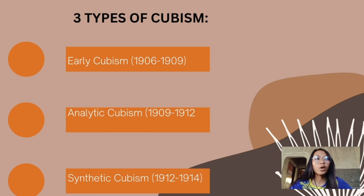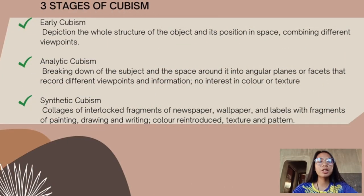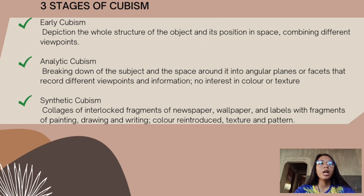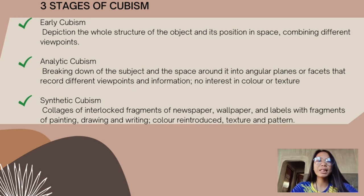There are three stages of Cubism. The first is Early Cubism, which involves the depiction of the whole structure of the object and its position in space, combining different viewpoints. The second stage is Analytic Cubism — the breaking down of the subject and the space around it into angular planes or facets that record different viewpoints and information. There is no interest in color or texture. Analytic Cubism is characterized by the use of monochromatic color schemes and flat, fragmented forms.